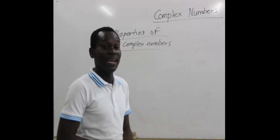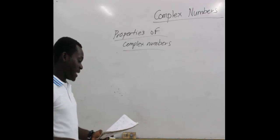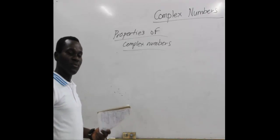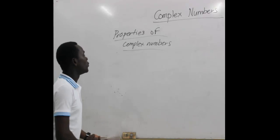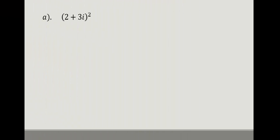Let's get to the board and try solving the given assignment. We will be solving Part A and Part D; the rest will be solved in a later session. For Part A, we are given (2 + 3i) all to the power 2. We first multiply what's in the bracket by itself because of the squared, and that gives us 4 plus 2 into bracket 6i plus 9i² when we use binomial expansion.